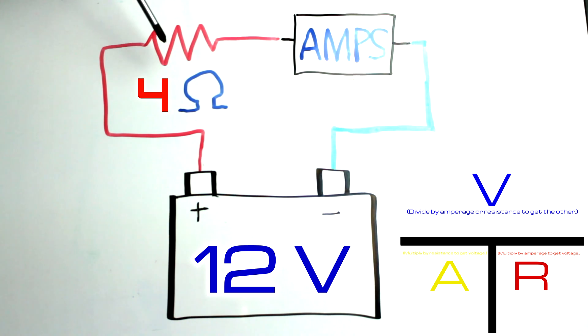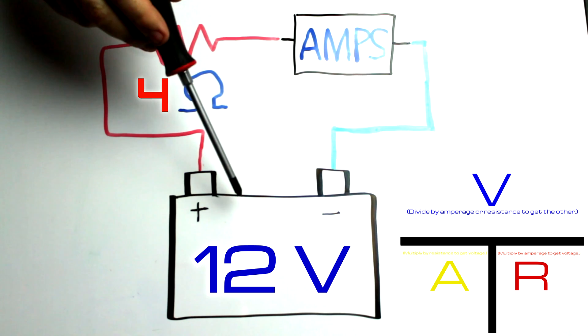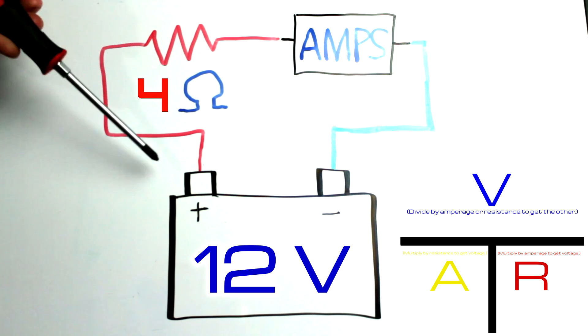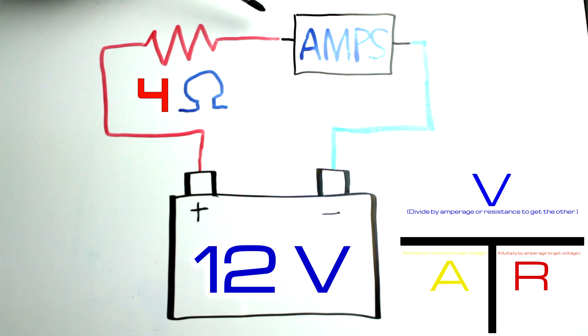How about we double the resistance and see what happens then. We're gonna stick with our 12 volt battery and with four ohms of resistance it's resisting more so current can't flow through here as freely. You end up with three amps. You may notice that we doubled our resistance so the amperage was cut in half.